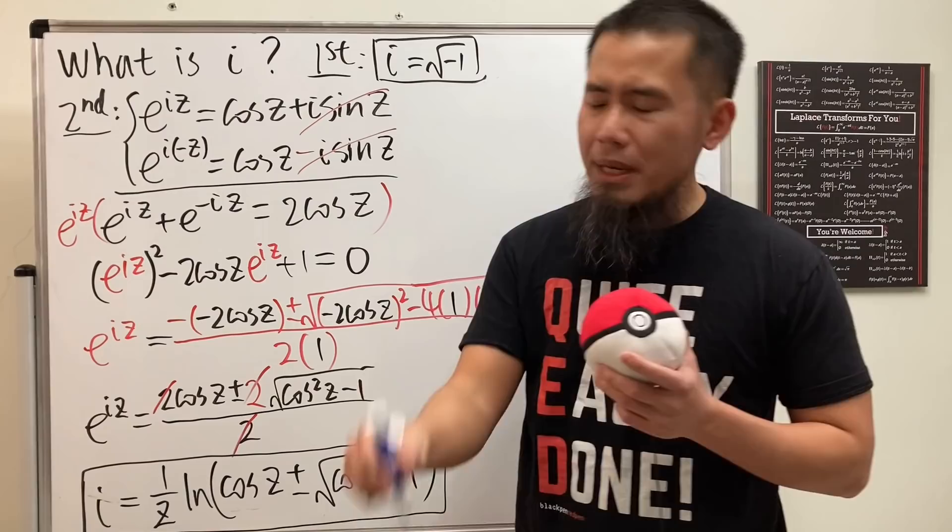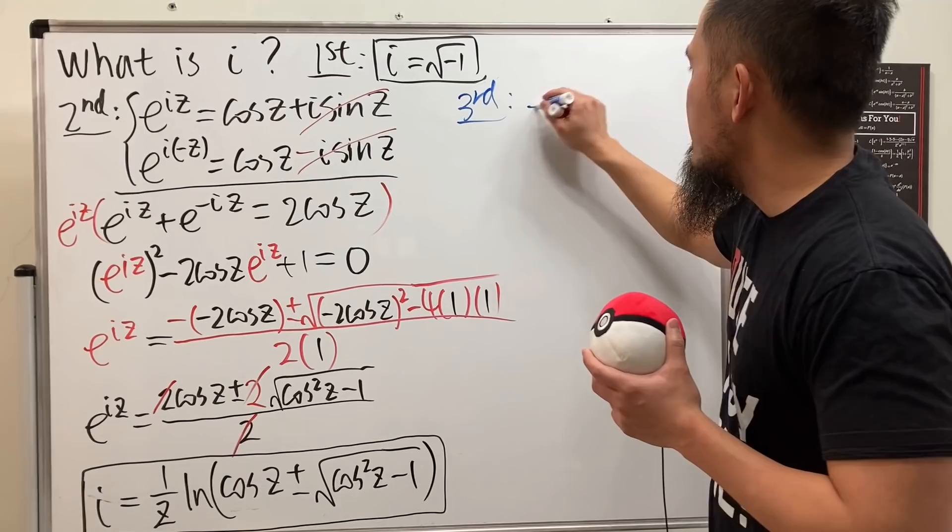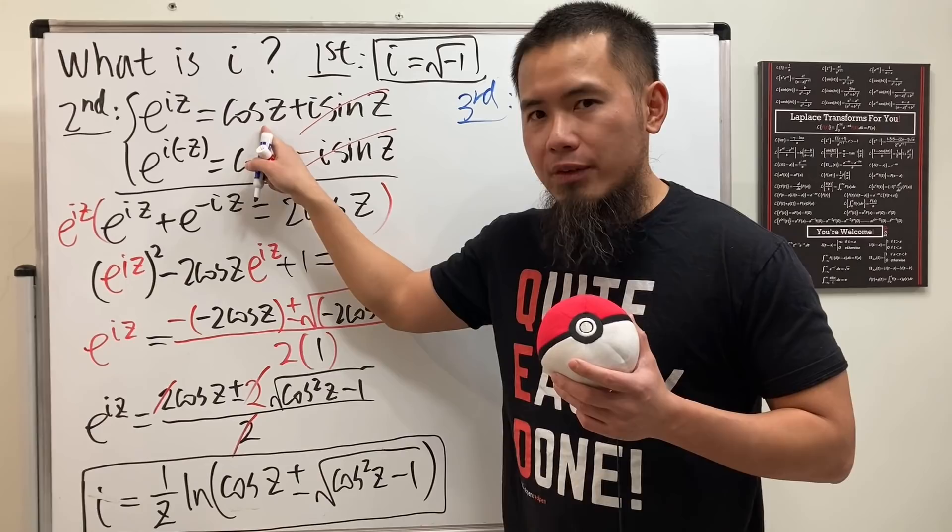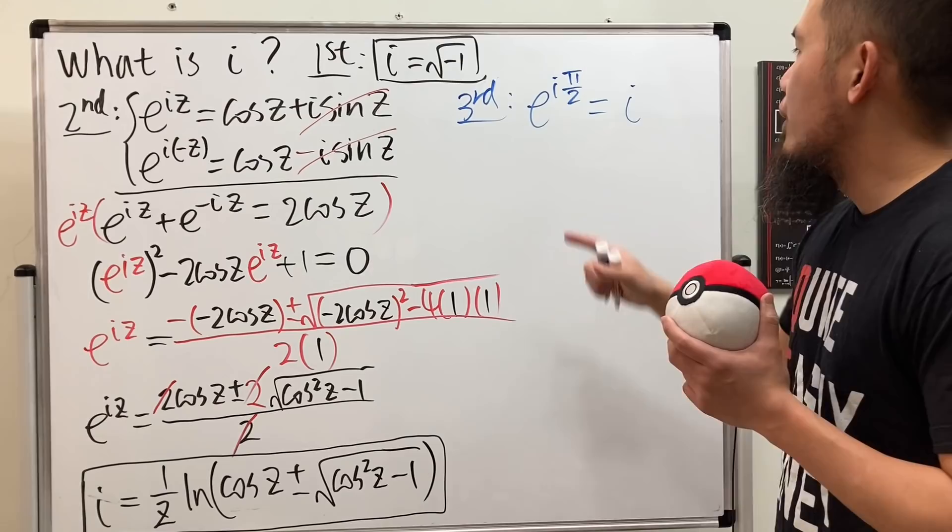So now for the third one, I will actually use the blue pen right here. All right. What we are going to do is, well, we are going to plug in pi over 2 into the z right here and we'll end up with e to the i pi over 2. That's being equal to cosine of pi over 2 is just equal to 0. Sine of pi over 2 is equal to 1. 1 times i is just equal to i. So this is what we have.